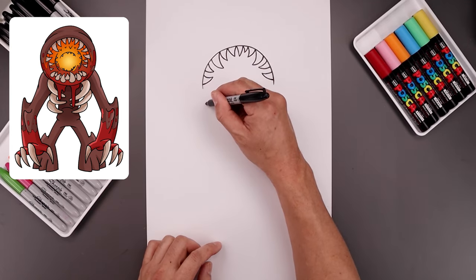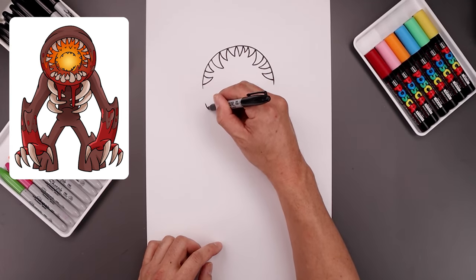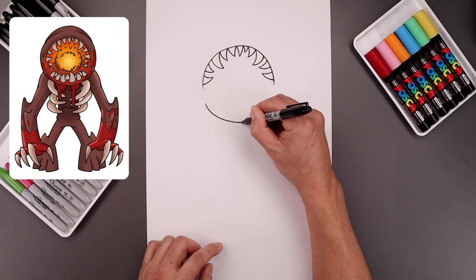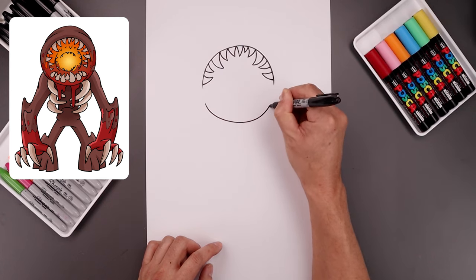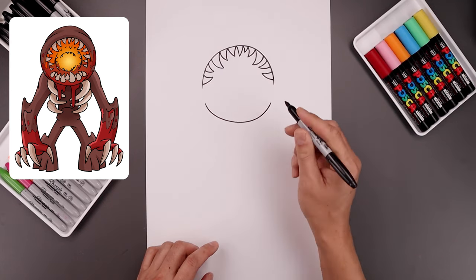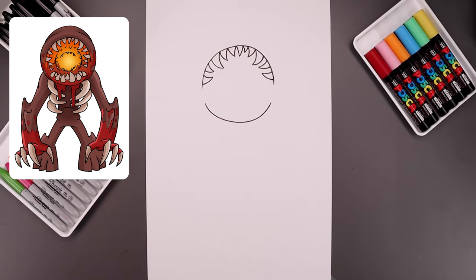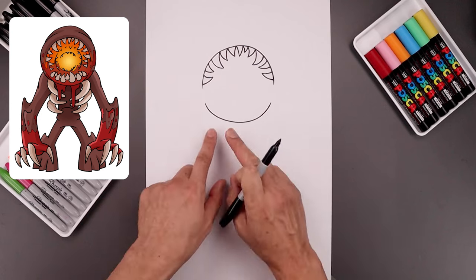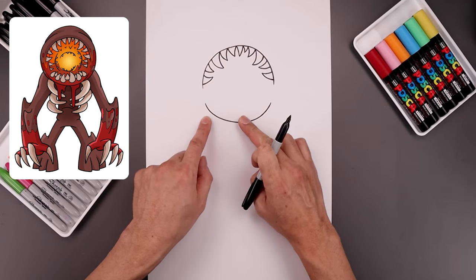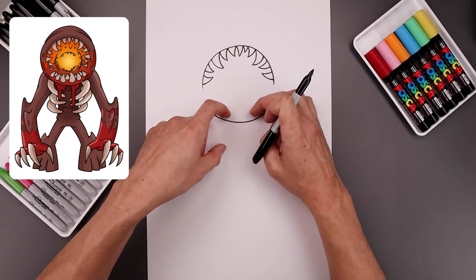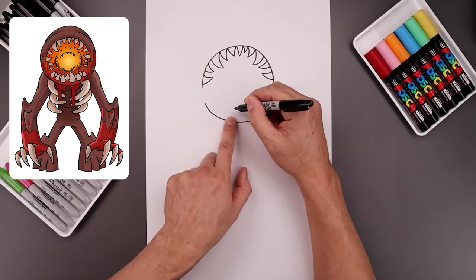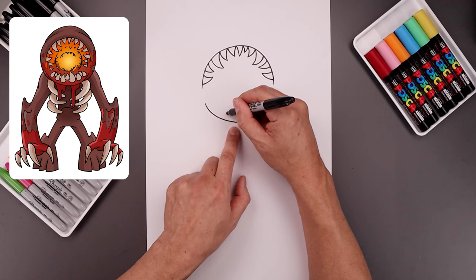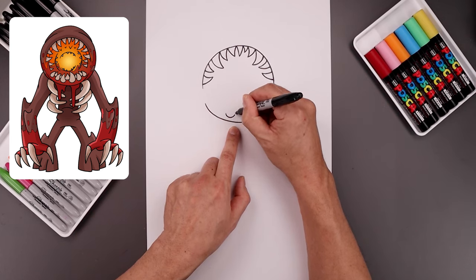Start over on the left, pull it down, round this out and then pull that back up. Now along the bottom we want to sink the teeth in towards the gum line — you can gap in the center. Let's start over on the left, start with a curve coming down and then up.